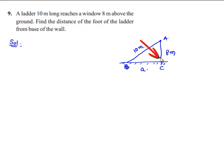This forms a right angle triangle ACB with hypotenuse as 10 meters and the other two sides as 8 meters and a meters.